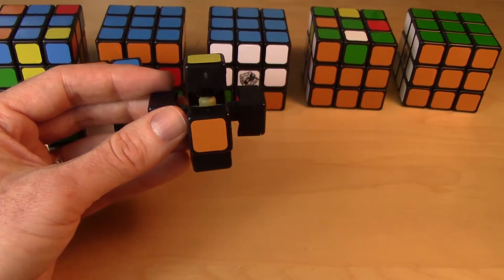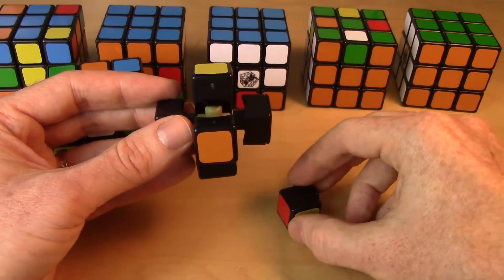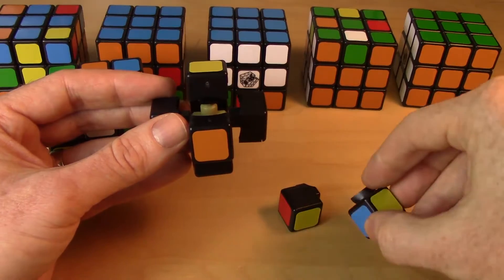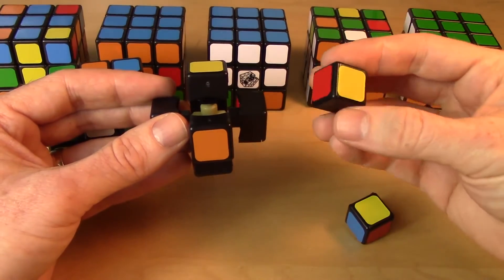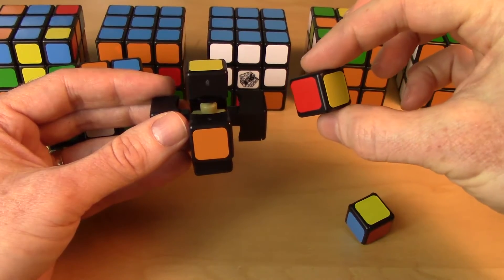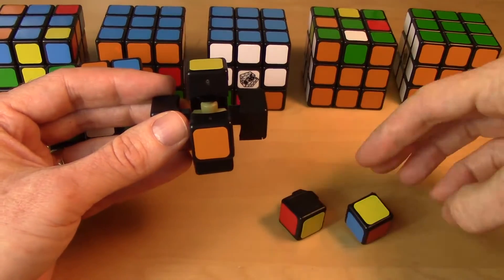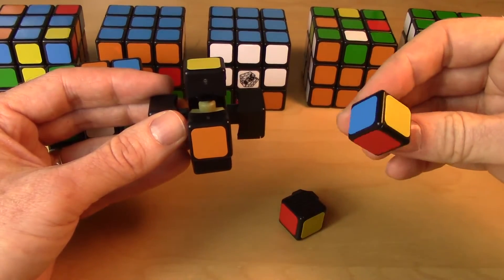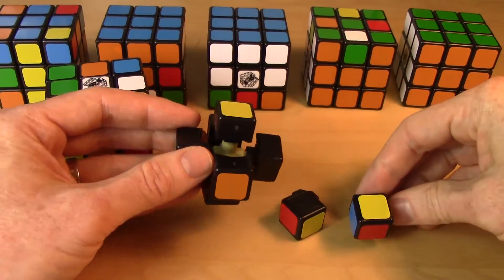So what about the pieces? Well out of this fell two varieties of pieces. One of the pieces has only two colored stickers on it. This is what we call an edge piece. And the other kind of piece has three colored stickers on it and this is what we call a corner piece.